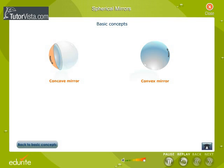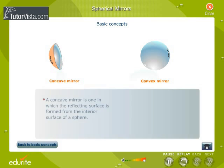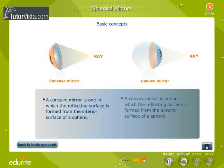Concave means curving inwards. A concave mirror is one in which the reflecting surface is formed from the interior surface of a sphere. Convex means curving outwards. A convex mirror is one in which the reflecting surface is formed from the exterior surface of a sphere.